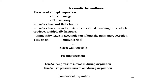Traumatic hemothorax means the accumulation of blood in the pleural cavity due to trauma to the chest. The blood comes from either contusion of the lung or from parietal vessel injury or internal mammary vessel injury. Treatment: simple aspiration, tube drainage — ICD water-seal drainage — or thoracotomy.